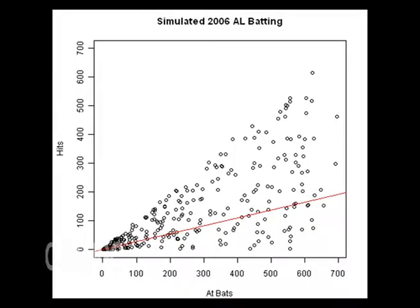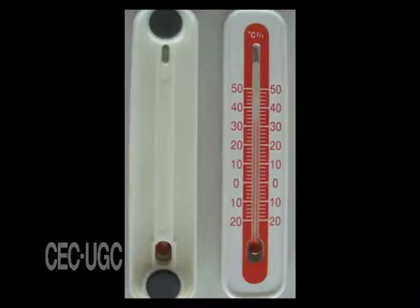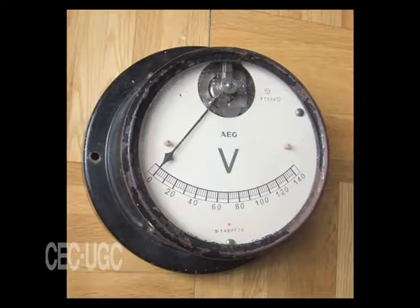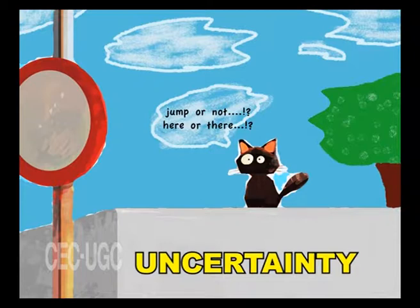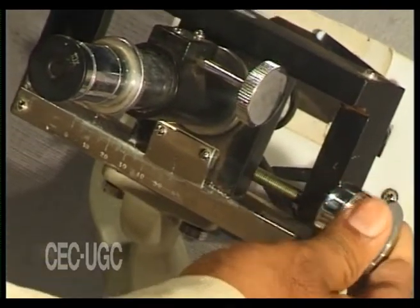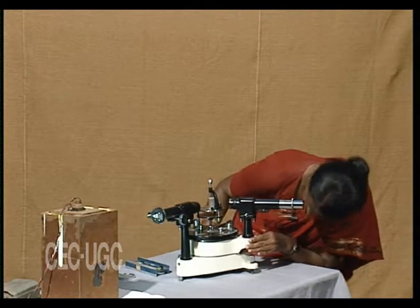Scientific measurements taken are usually tabulated, graphed or mapped, and statistical manipulations such as correlation and regression performed on them. The measurements often require specialized scientific instruments such as thermometers, spectroscopes, or voltmeters. Measurements in scientific work are also usually accompanied by estimates of their uncertainty. The uncertainty is often estimated by making repeated measurements of the desired quantity. Counts of things, such as the number of people in a nation at a particular time, may also have an uncertainty due to limitations of the method used.